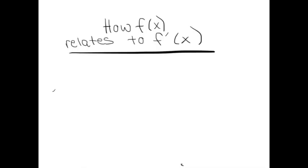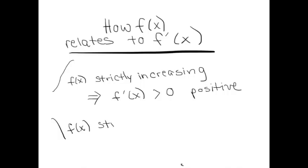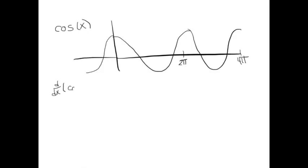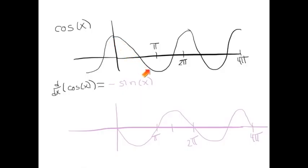Remember the rules relating a function's graph to its derivative's graph: if f(x) is strictly increasing, f′(x) is positive; if f(x) is strictly decreasing, f′(x) is negative. Here's the cosine function, and what we found is that its derivative equals −sin(x). Between 0 and π, cosine is decreasing, so all its slopes are negative — and indeed the negative sine function is negative there. Cosine is decreasing where negative sine is negative, and cosine is increasing where negative sine is positive.